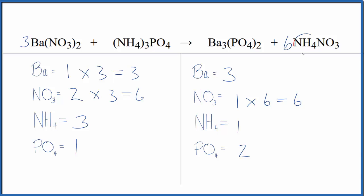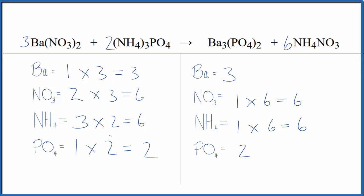And then we have the ammonium ion — 1 times 6, so we have 6 of those. If we put a 2 here, we have 3 times 1, there's 3 times 2, that gives us 6. We have 1 phosphate times 2, that gives us 2 phosphates, and we're done. This equation is balanced. You can see the utility of this method if you count the polyatomic ions as one thing when they appear on both sides.